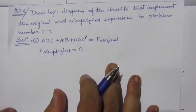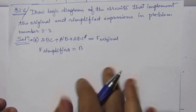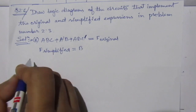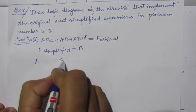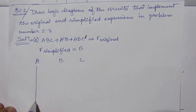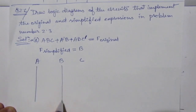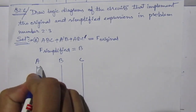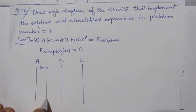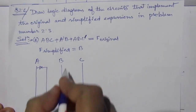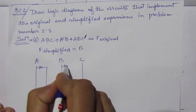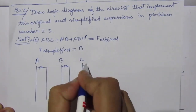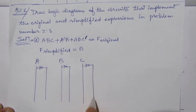Now we have to draw the logic diagrams. We have three inputs A, B and C, so draw three lines A, B and C. Also find their complements using inverters: you will get A̅, B̅ and C̅.